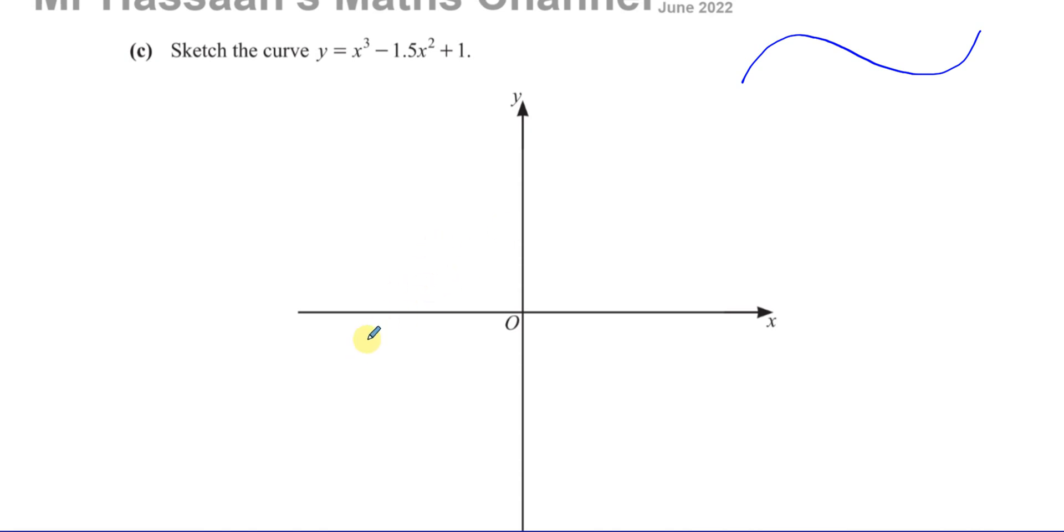But what we can do is we can sketch it something like this. It's going to turn at 1. Then it's going to turn again over here and go up again. So this point here is 1, 0.5. This point here is 0, 1. So those are the two important points.